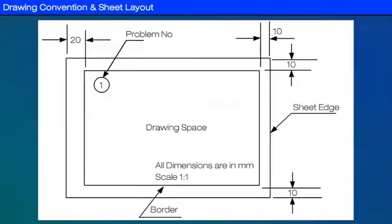We have seen various drawing instruments used in engineering drawing. Now we shall move on to drawing conventions and sheet layouts. For simplified A3 sheet layouts, the border should be drawn 20mm from the left and 10mm from the right, top, and bottom edges of the paper. The question number should be written at the top of the page, and the scale should be mentioned in the right corner.